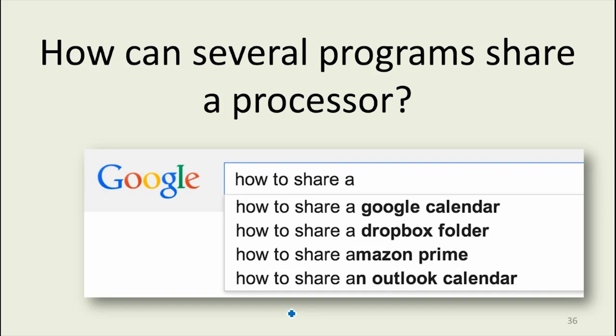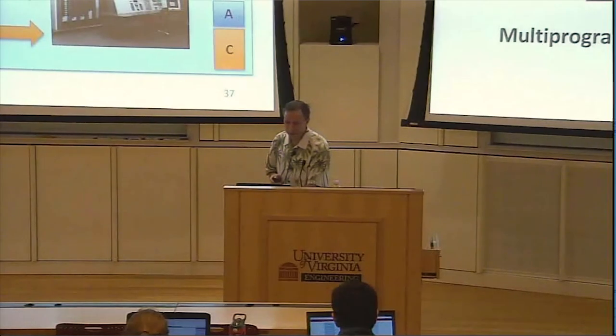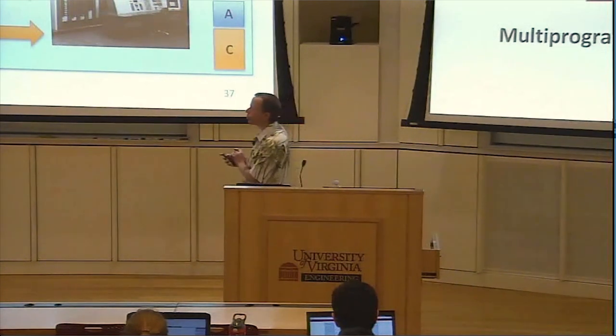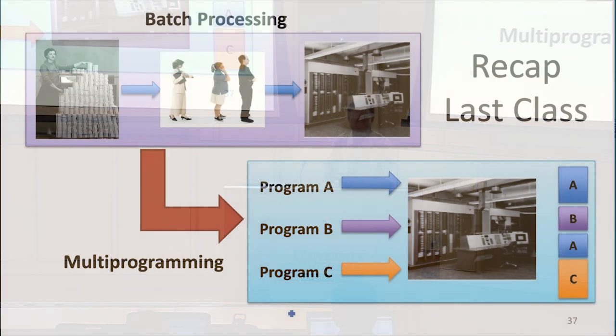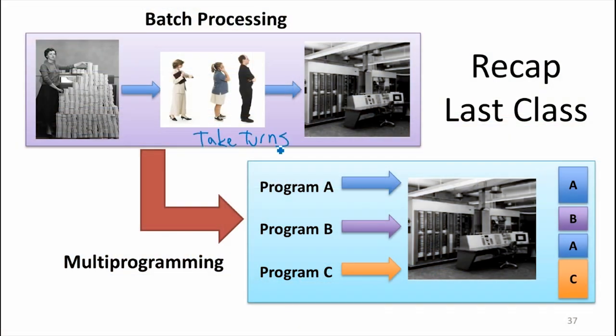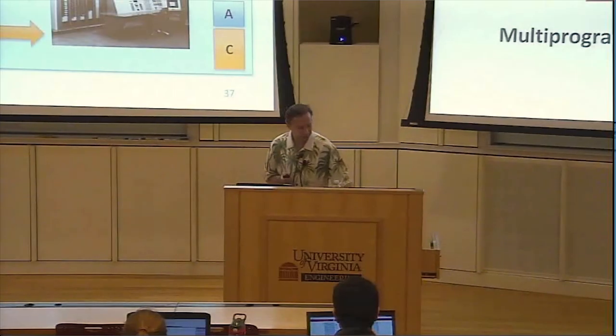If you have several programs sharing a machine, how can they do that? As we talked about last class in the history, we went from batch processing where you didn't share a processor and just took turns. We switched in the 1960s to multiprogramming, where instead of taking turns with expensive hardware sitting idle, you can now run other programs while waiting. So what's necessary to do that?